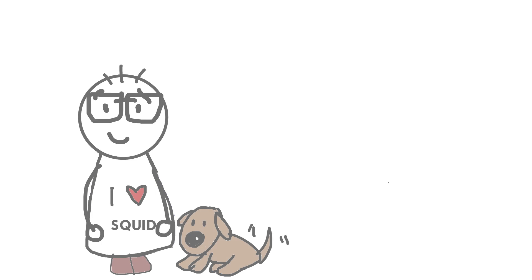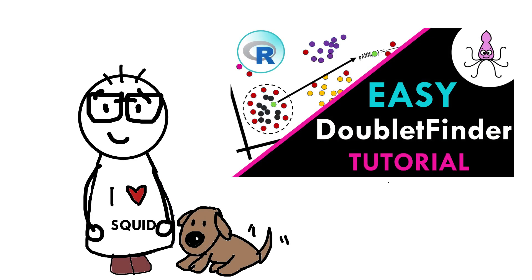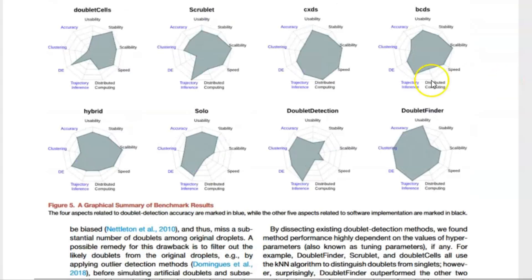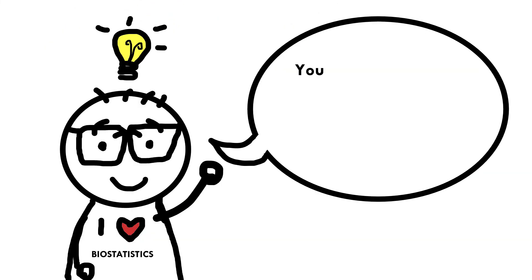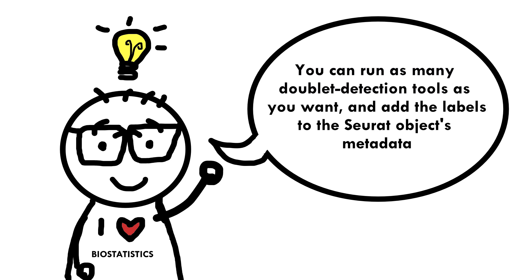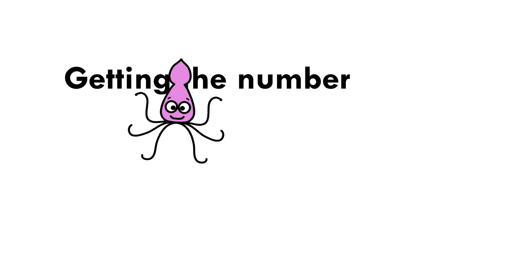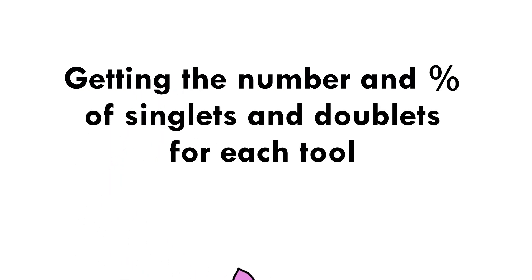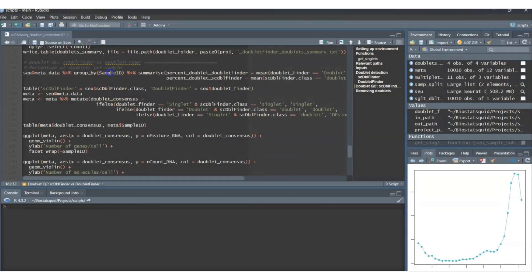In the last video we ran DoubletFinder, but you may have run different tools for doublet detection — that's okay. Basically, in the metadata of your Seurat object you have one or more columns with labels singlet or doublet for each cell. We can get a quick summary of how many doublets were called by DoubletFinder and how many were called by SCDoubletFinder. Let's get a quick summary of the percentages.